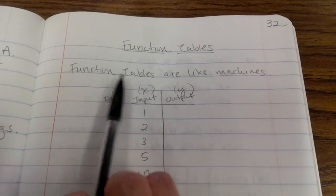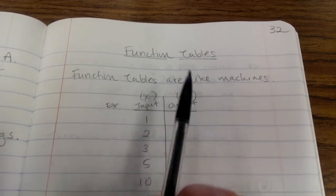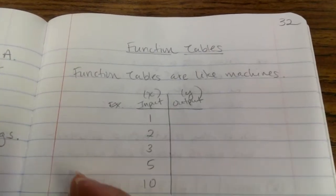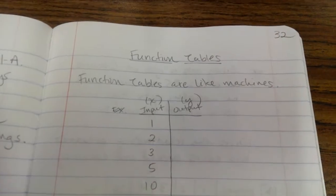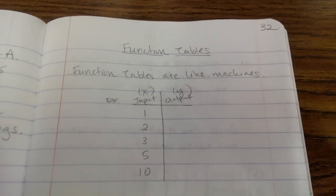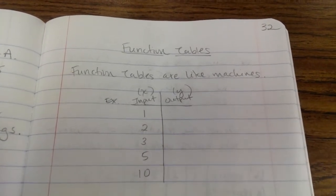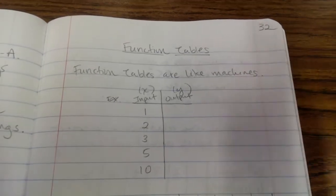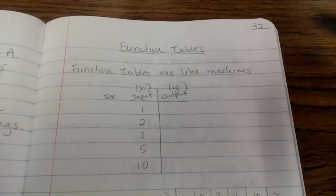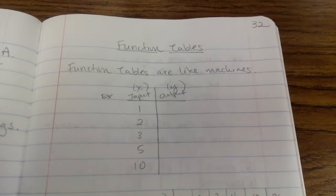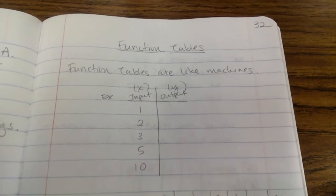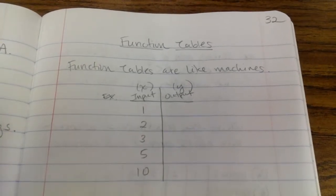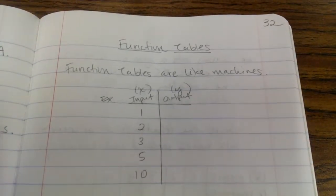When you look at a table in math, function tables are like machines. You enter in a number, and then the table does something to the numbers you enter, and then it spits out another number. You always see two or more rows, so your input is on one side and it comes out with a new number on the other side.